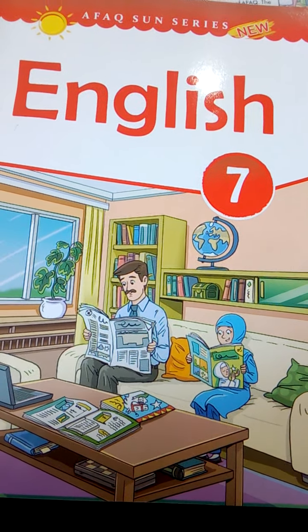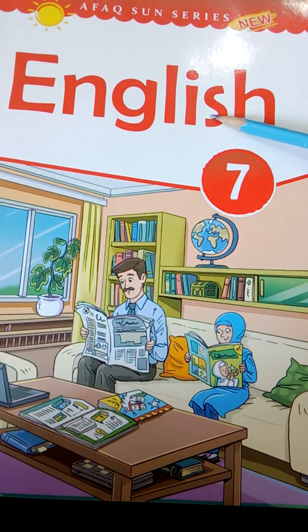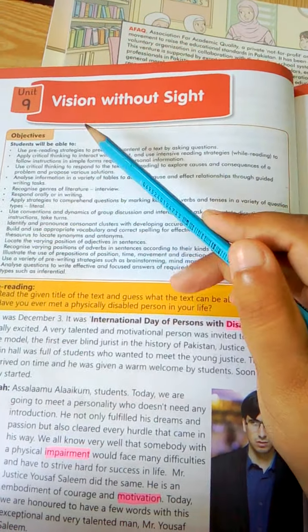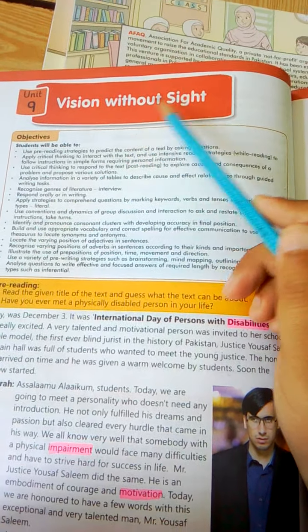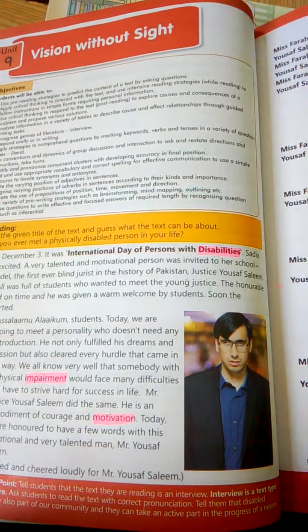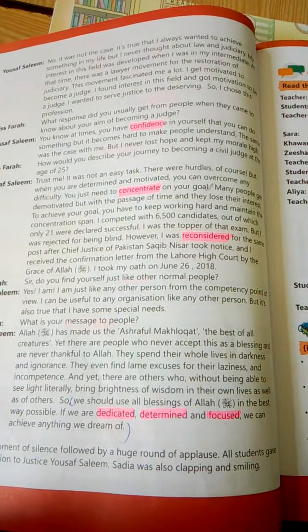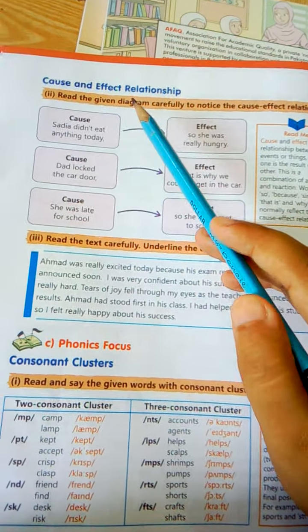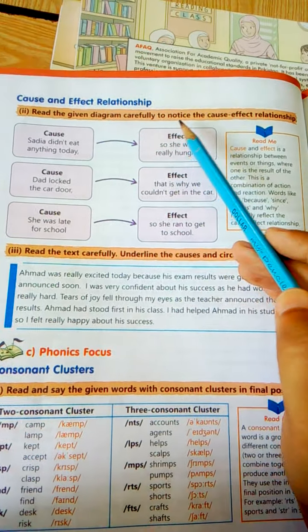Bismillahirrahmanirrahim, Assalamu Alaikum. As you know, we are doing chapter number nine, 'Vision Without Sight.' We did reading, dictation words — you can say difficult words of this chapter — and the word synonyms. Today we are going to do cause and effect relationship.